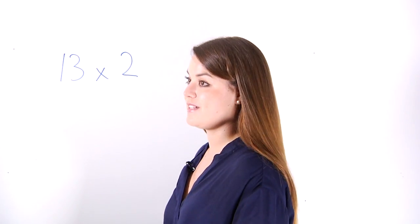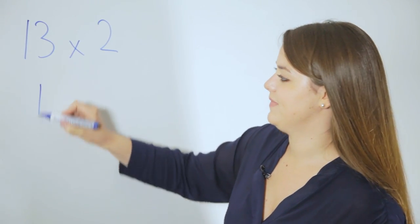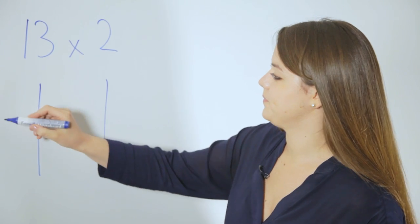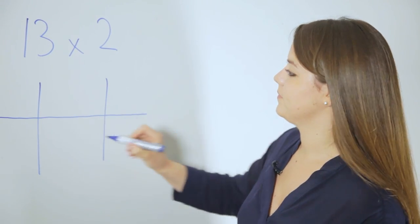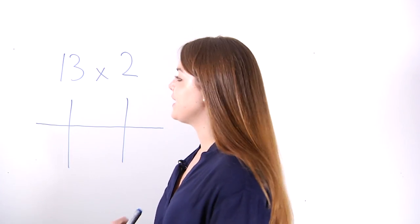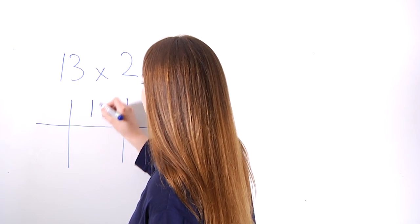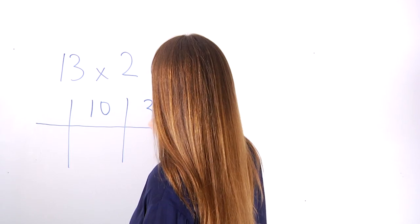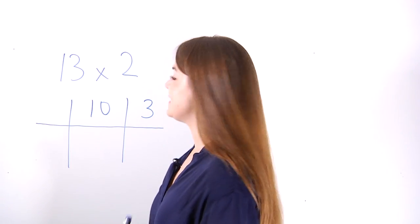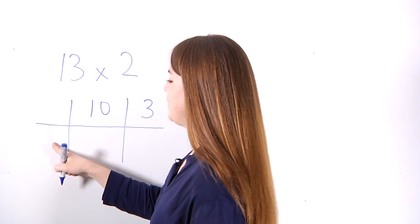We're going to use an array to put this into a grid method. The first thing we're going to do is split 13 into tens and units. The next thing we're going to do is take the number we're multiplying and put it there.